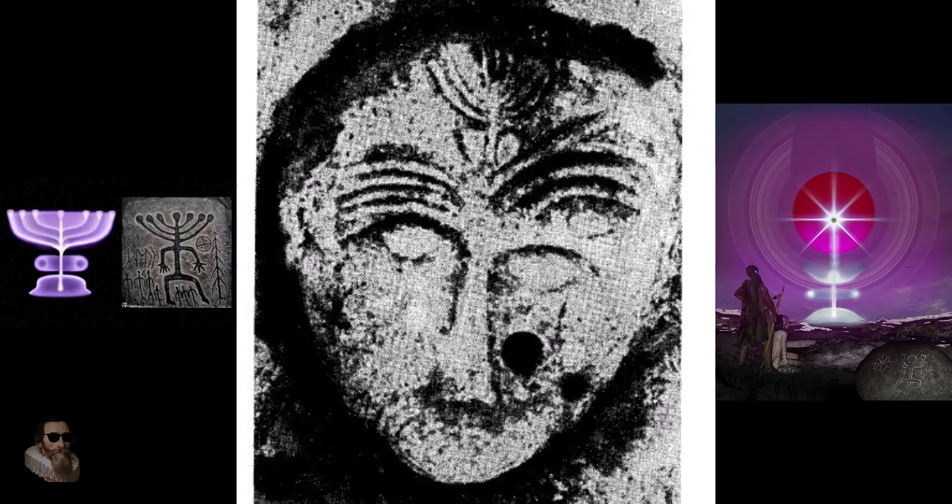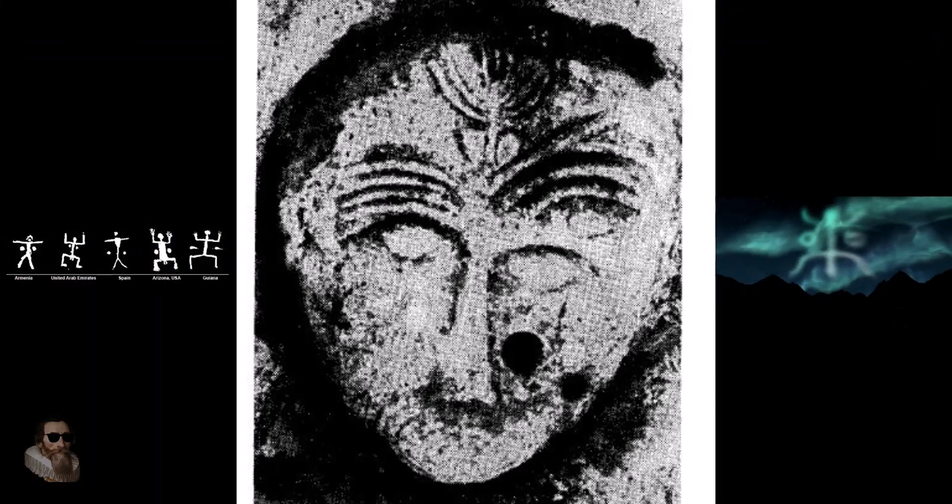Another notable anomaly is the dark circular mark near the mouth or lower face. In plasma iconography, nodes, plasmoids, or anode-cathode points are often depicted as dots, circles, and voids. Similar features appear in the Sego Canyon figures, the Barrier Canyon style art, and in Scandinavian bronze age carvings. This could represent a plasma knot, a sound-light emission point, or the voice of the god — echoing myths where the sky entity speaks or roars.